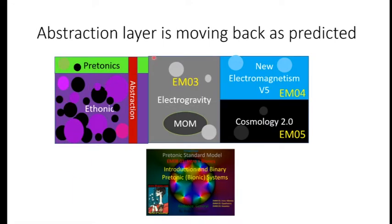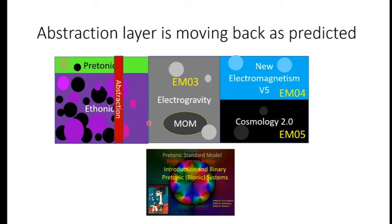As we move up the abstraction layer and do more of the work, we're going to uncover pieces of the puzzle back in the ethonic layer — and that's what just happened. We're going to be moving the abstraction layer back as we fill in these missing pieces, and we're going to apply the patches as we go forward.